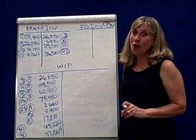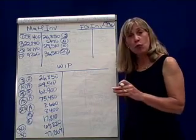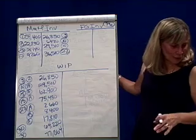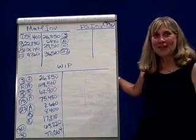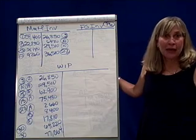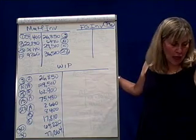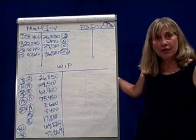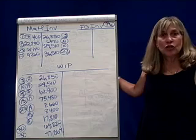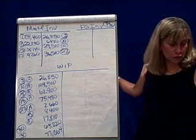Managerial accounting, job order costing. We're looking at cost flows and right now we're on September 30th. On September 30th, we completed and transferred Job A, which was 58,840 units, and Job B, which was 3,525 units, into finished goods for a total cost of 322,400.